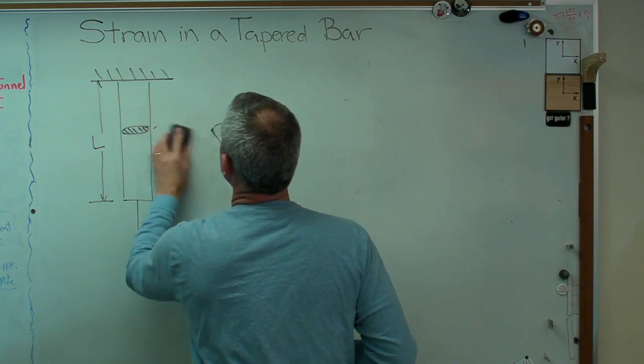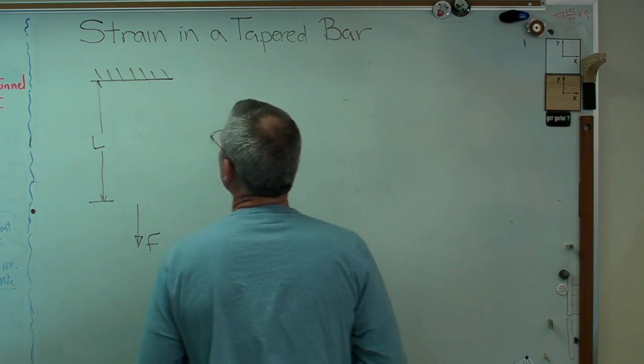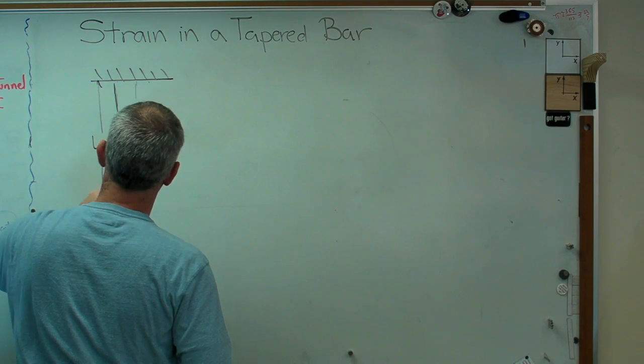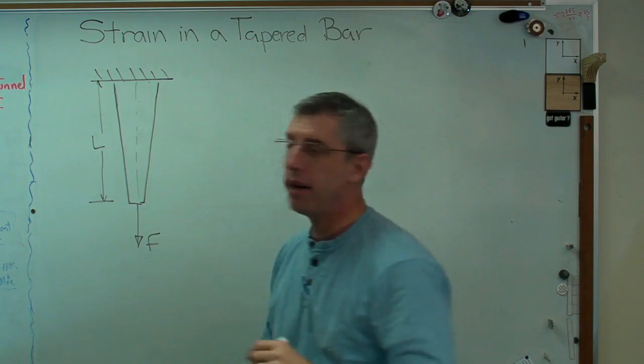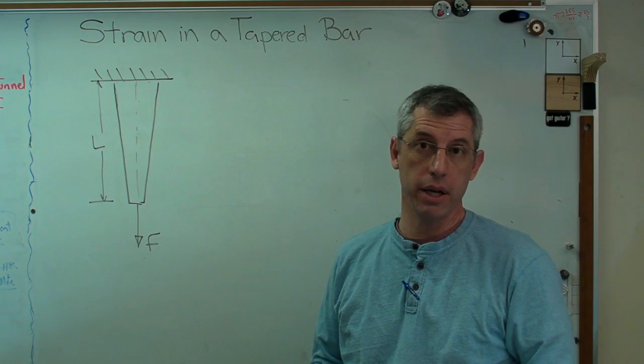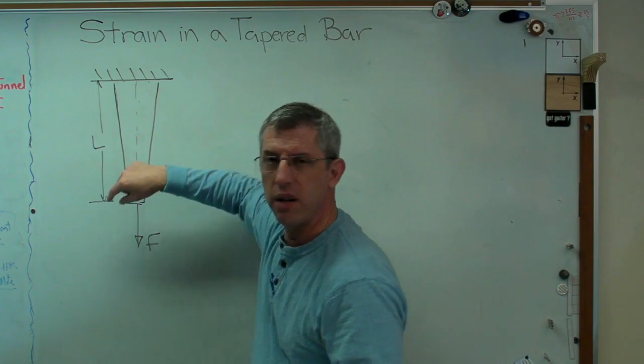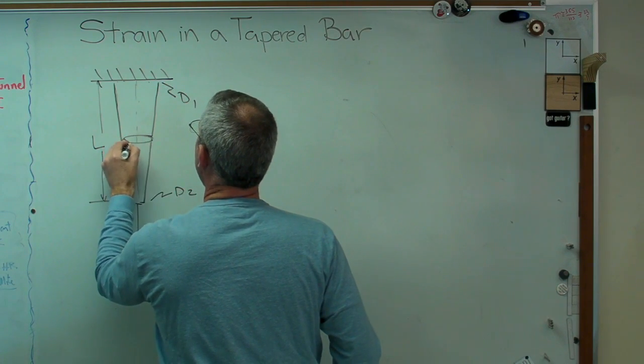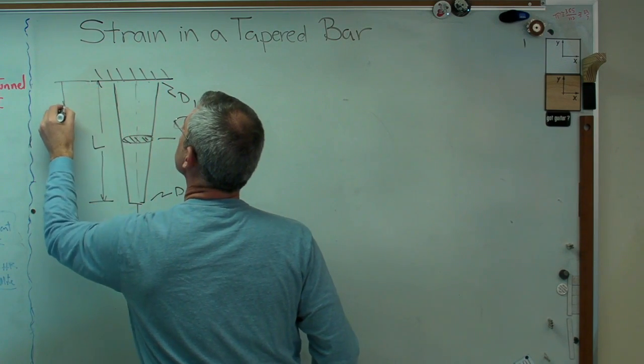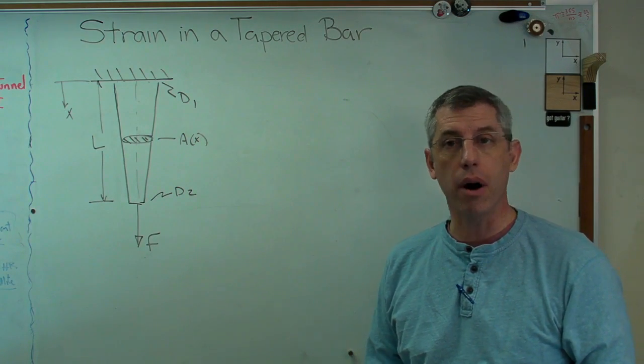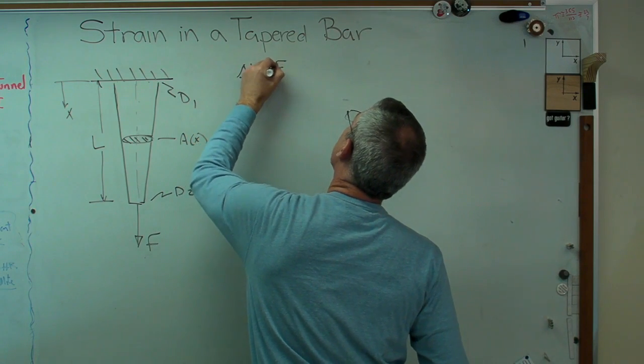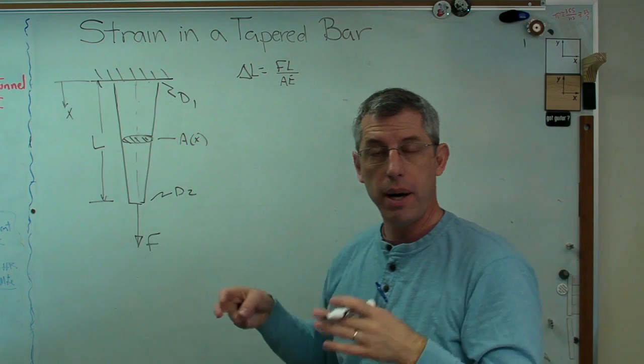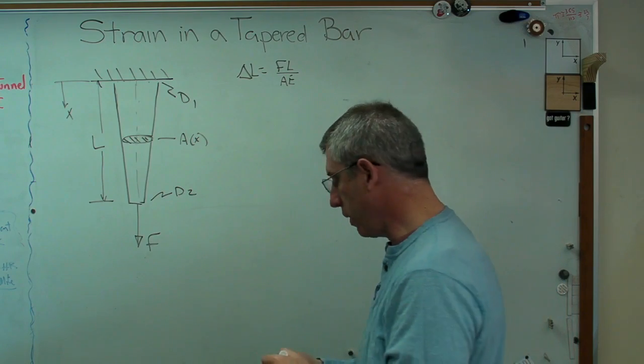What if we change this and I'm going to leave everything the same except now I'm going to make the bar tapered. Let's say it's tapered like that, constantly tapering. I have a diameter up here I'll call D1 and a diameter down there I'll call D2, and that's now A of X. The cross sectional area depends on where I am in the bar. That only works for a constant cross section. What if I approximate this bar by a bunch of constant cross section segments and add those up? That ought to work.